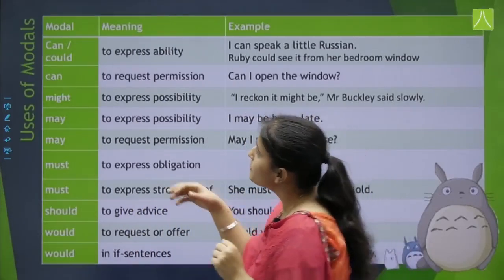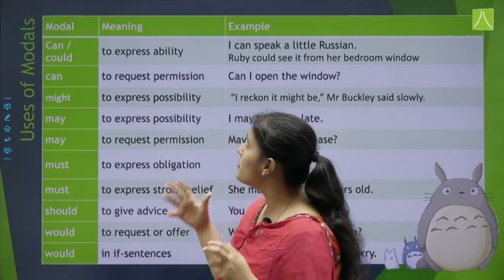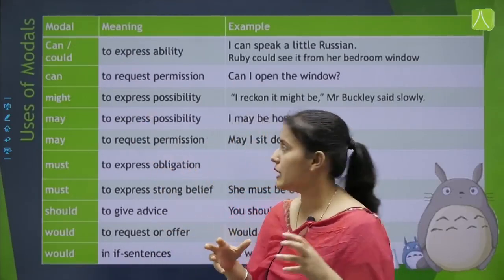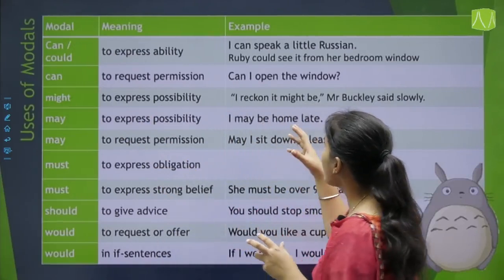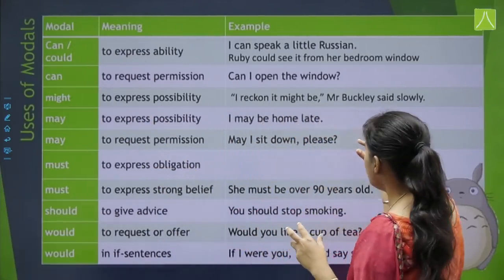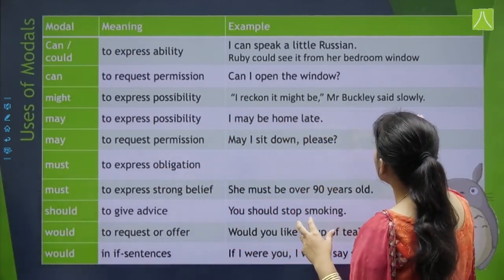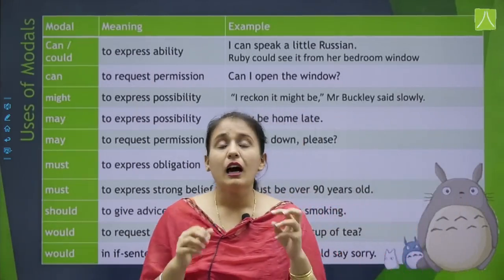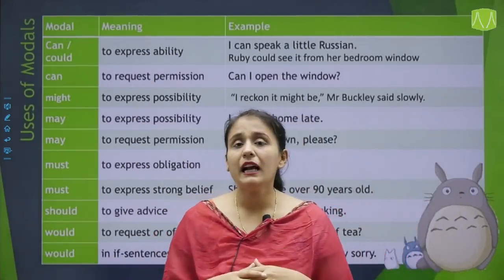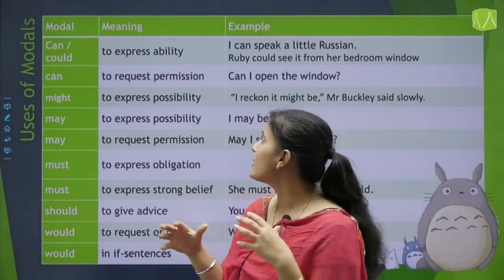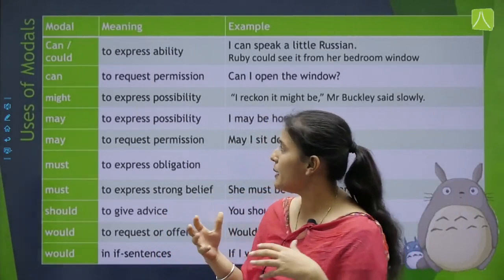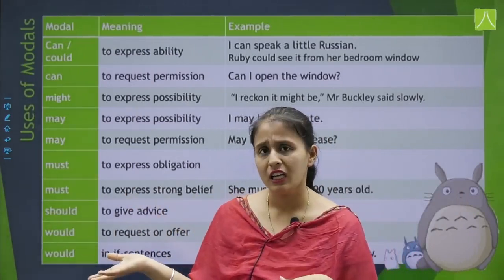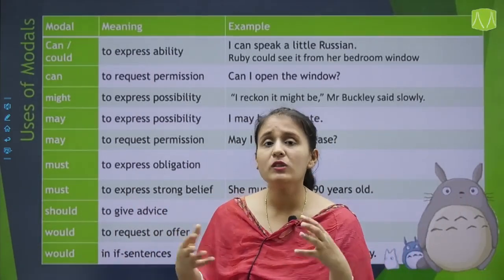Next comes might. Might ko hum kis liye use karte hai? Possibility batane ke liye. 'I reckon it might be Mr. Buckley,' said slowly — yaha par possibility hai, aisa ho sakta hai. For example: 'It might rain today' — ye ho sakta hai.